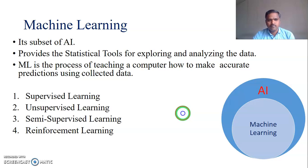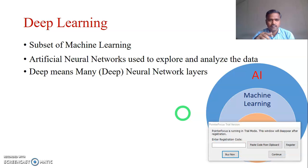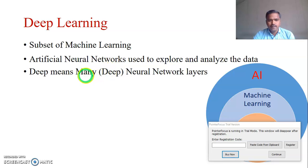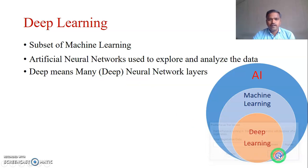The third topic is deep learning. Deep learning is a subset of machine learning. Artificial neural networks are used to explore and analyze the collected data. It is called deep learning because the neural network uses many layers — whereas in machine learning mostly a single layer neural network is used, deep learning uses many neural network layers. Deep learning is mostly used for computer vision, voice processing, and temporal kinds of data.